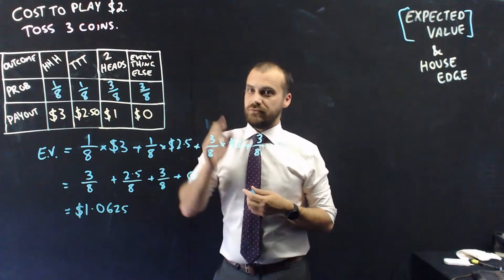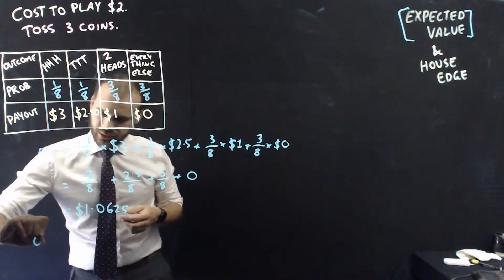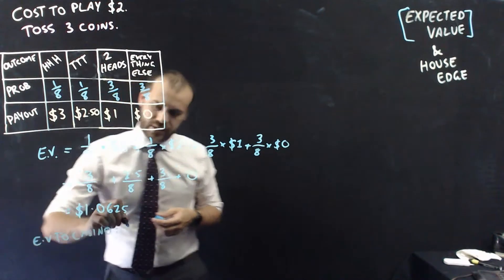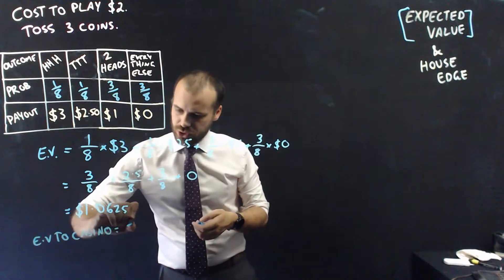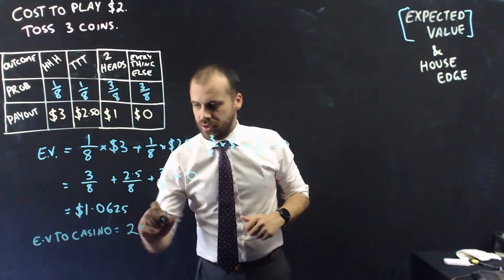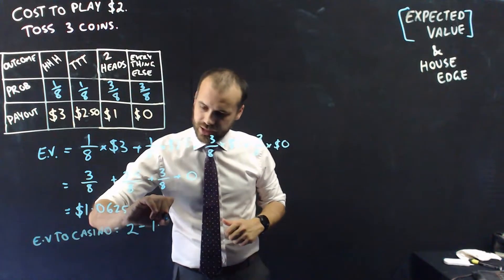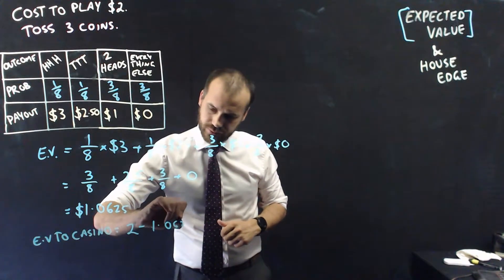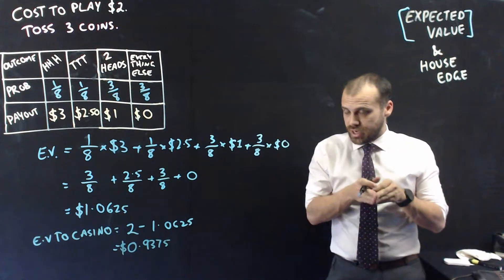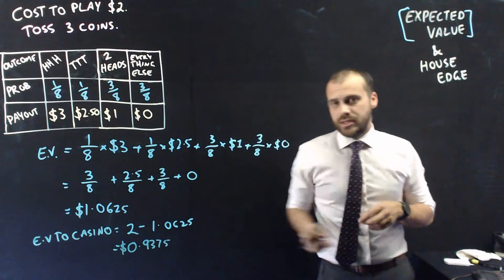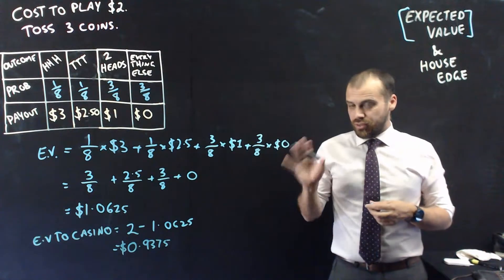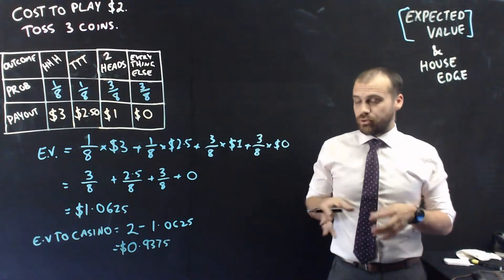So this is the expected payout, the expected value of the payout. But the expected value to the casino is going to be equal to $2, which is the money that the person pays to play, minus that expected value for the payout. So that means that every time someone plays this game, the casino expects to make about $0.94. That is pretty impressive, actually.